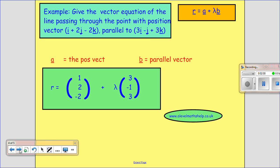Okay, so first example, give the vector equation of a line passing through the point with position vector I plus 2J minus 2K parallel to 3I minus J plus 3K. Okay, so all I need to do is identify the position vector, and it says it, so it's here.